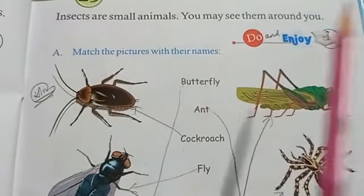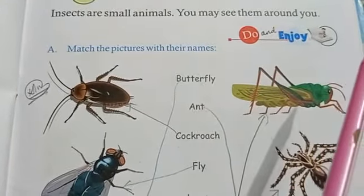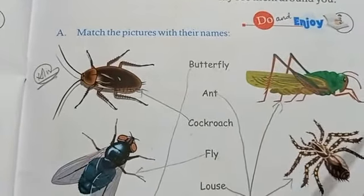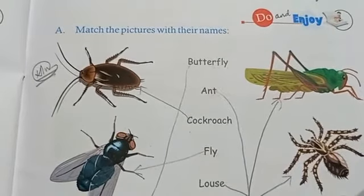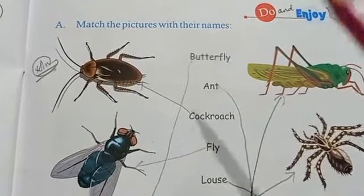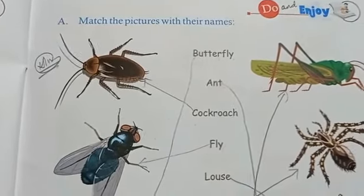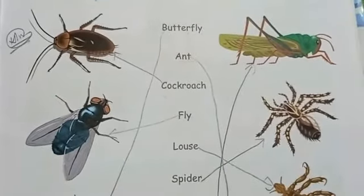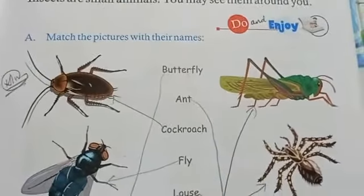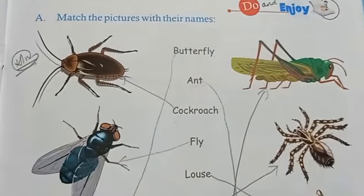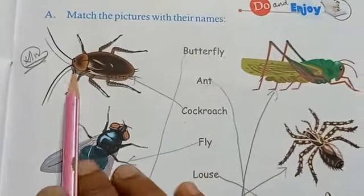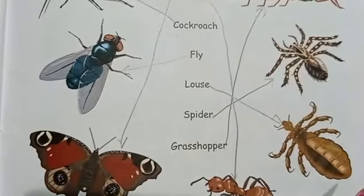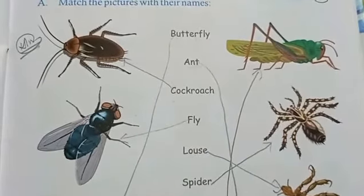Insects are small animals and you may see them around you every day. Some insects have wings to fly in the air, and most of the insects have six legs — remember that. Your homework is to learn the names of the insects. That's it for today's class, thank you.